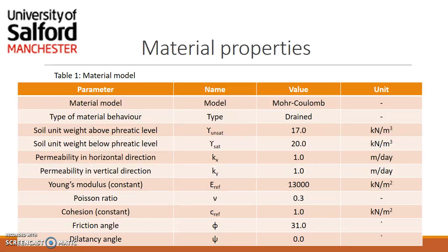We have our unit weight — both saturated and unsaturated — which can be measured in the laboratory. The permeability is assumed to be uniform in both the x and y directions. Our Young's modulus is taken to be 13,000, which is assumed for the type of material we are using. The friction angle is 31 degrees, and this value can also be obtained in the laboratory.